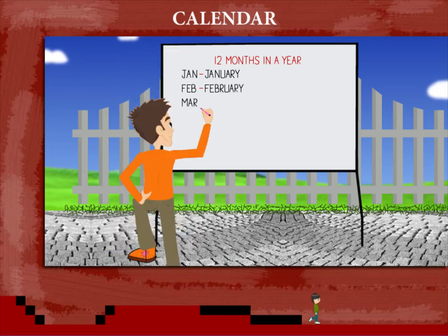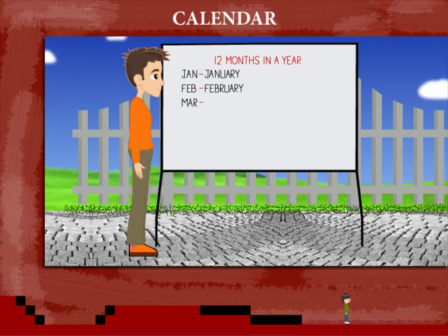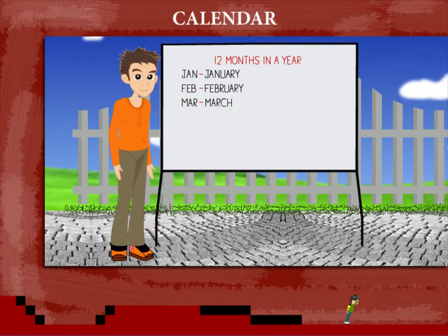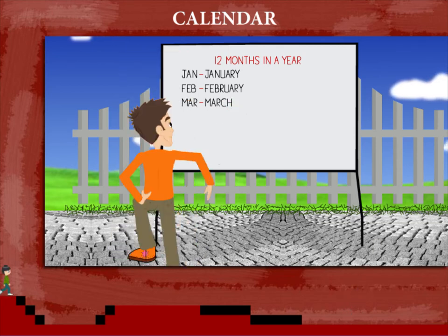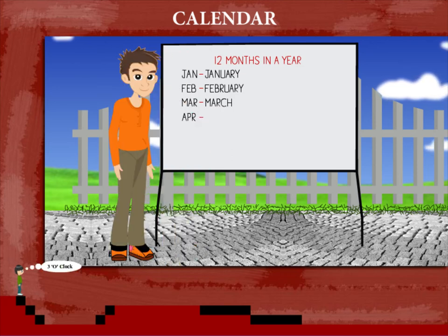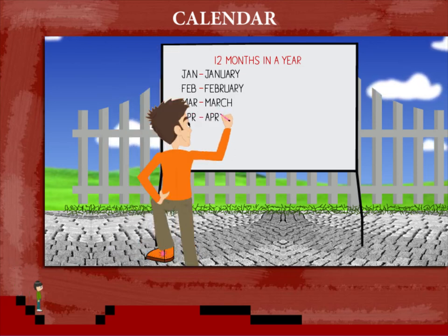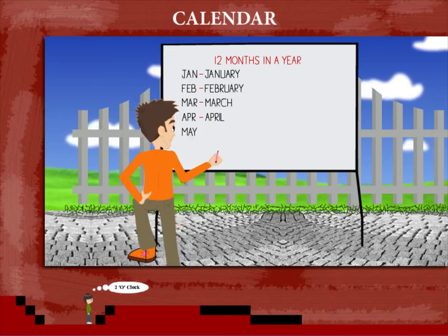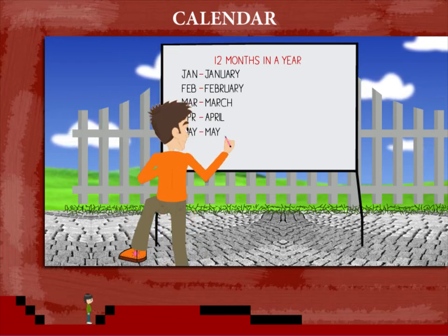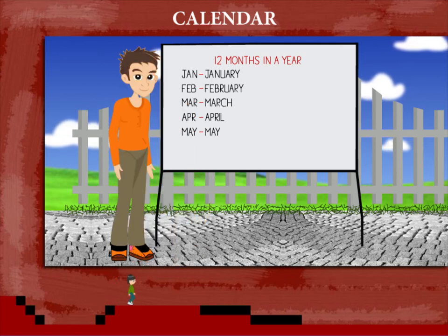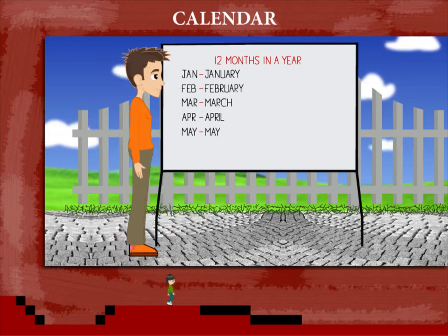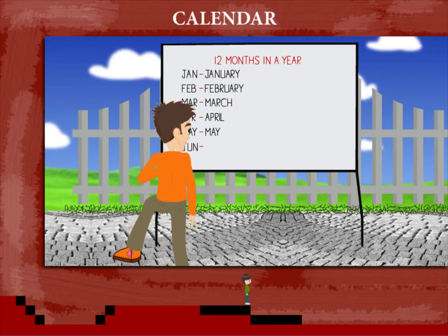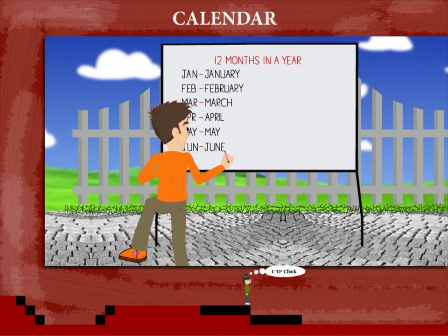Mar is the short form for March, the third month of the year. Apr is the short form for April, the fourth month. May is May, the fifth month of the year. Jun is the short form for June, the sixth month of the year.